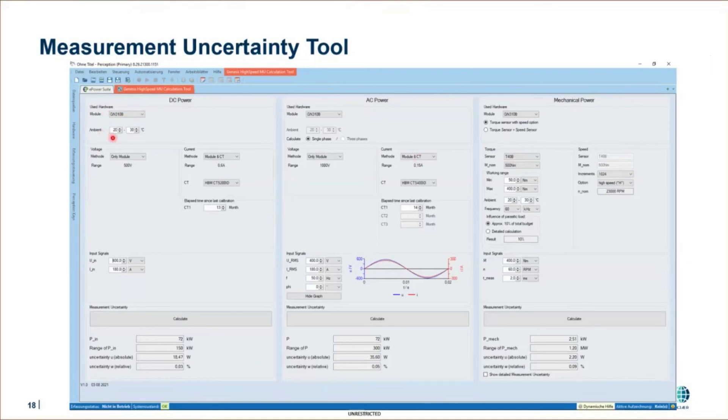Max temperature, the time which is elapsed since last calibration, all those side effects. And then you can calculate the measurement uncertainty. And what you get as a result is you get the specified power, which you measure, the power range and also the measurement uncertainty as absolute and also as relative information. And of course, this is the first step to do that offline for steady state operating points. But you can imagine the long term goal is that we specify that with the measured value.